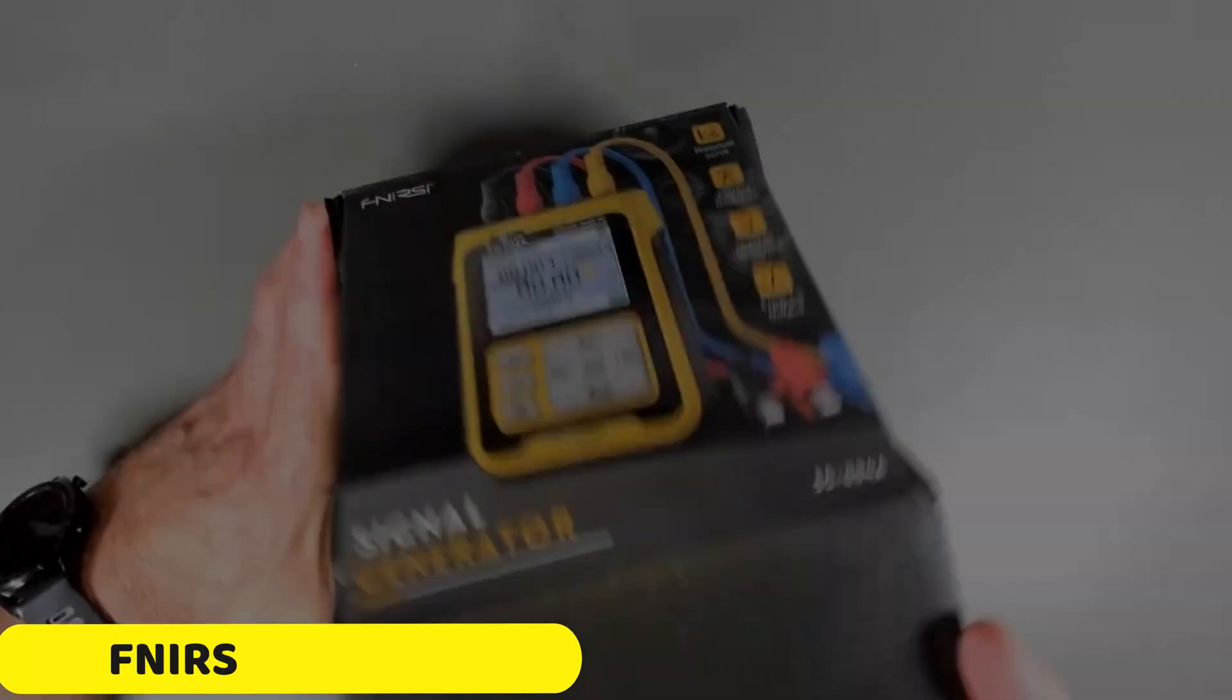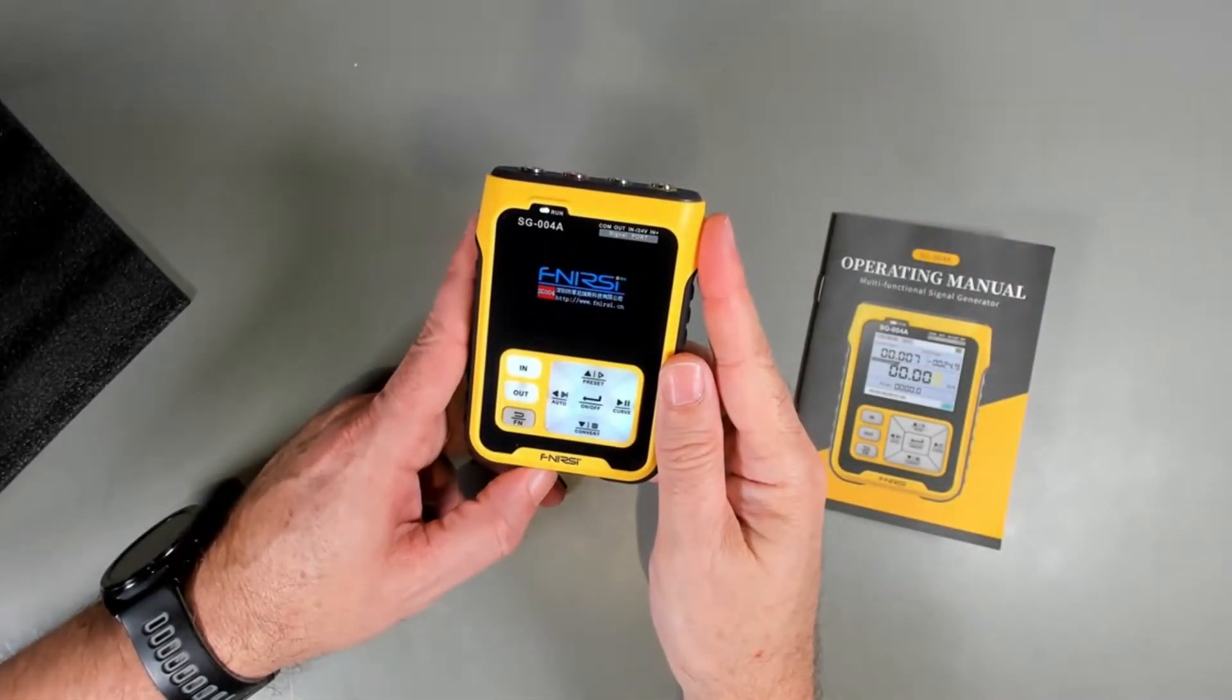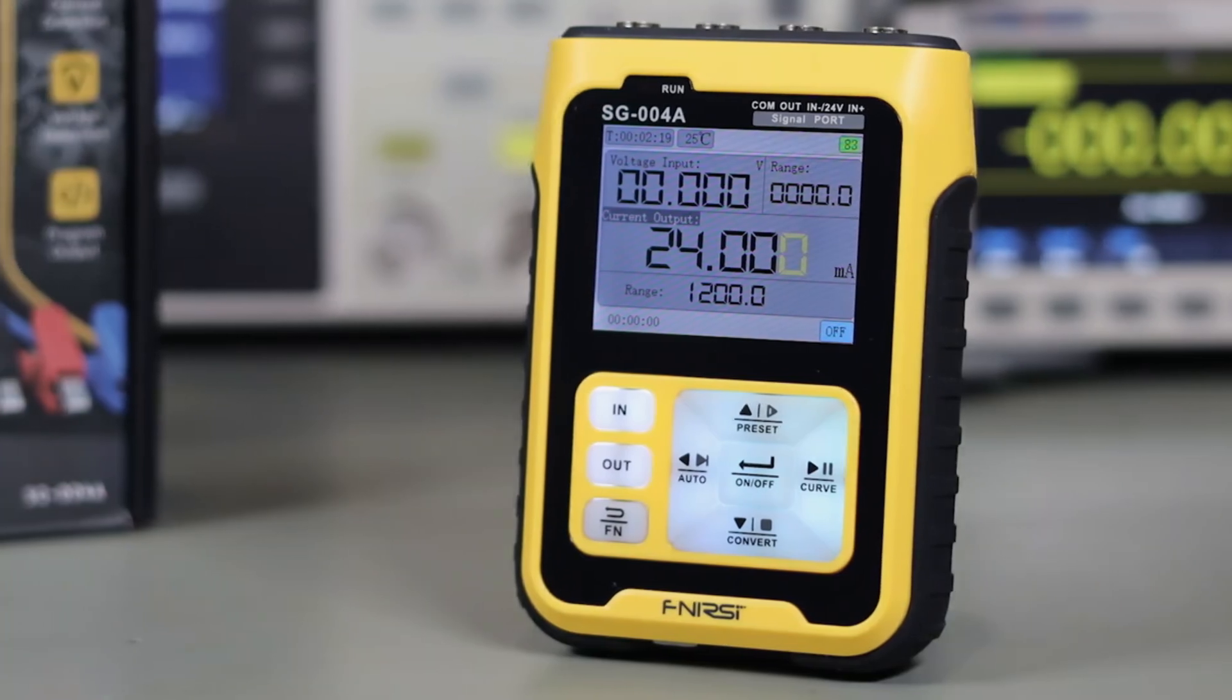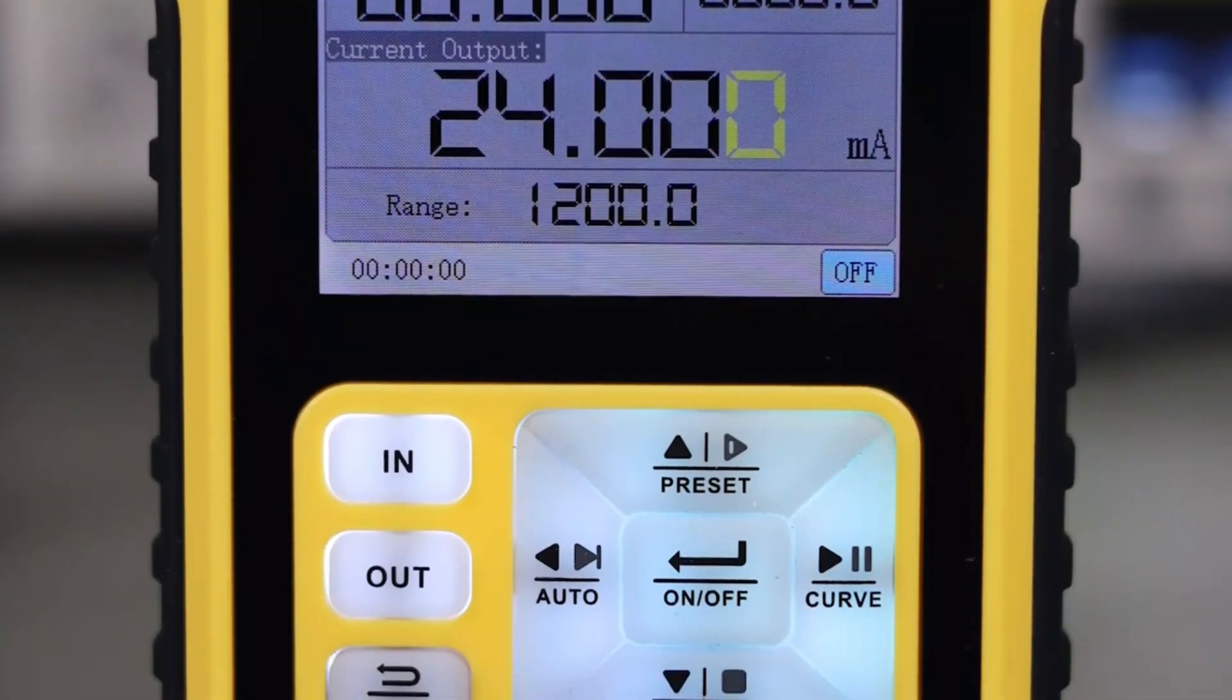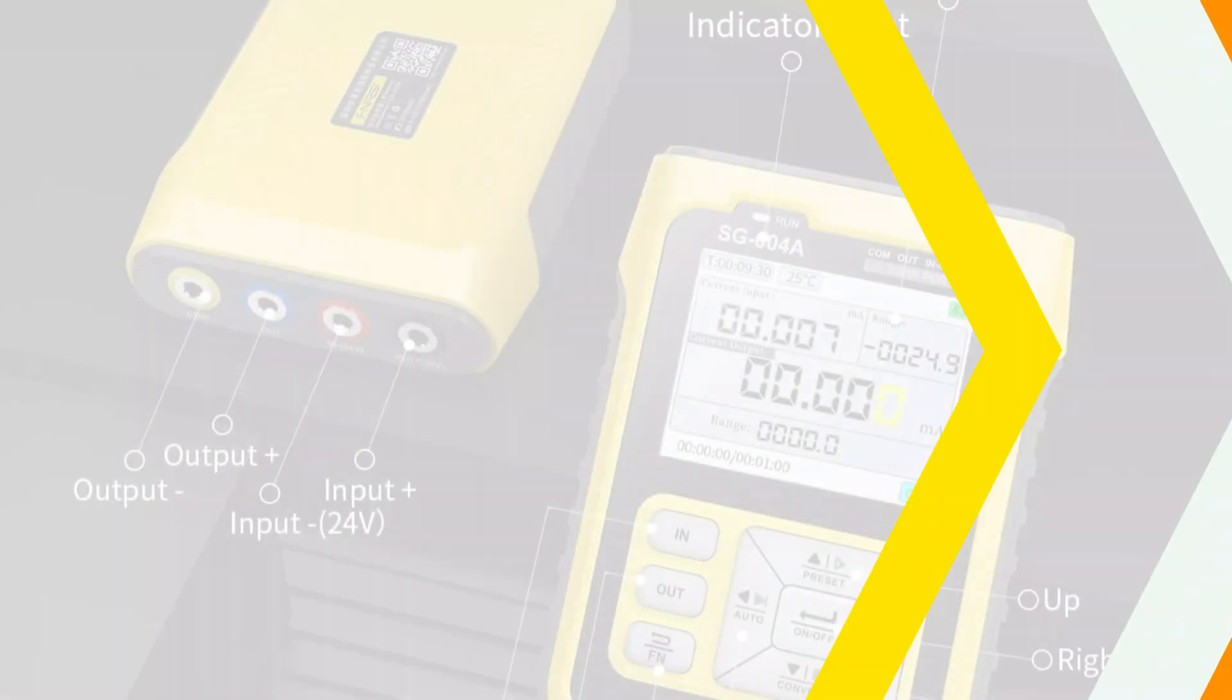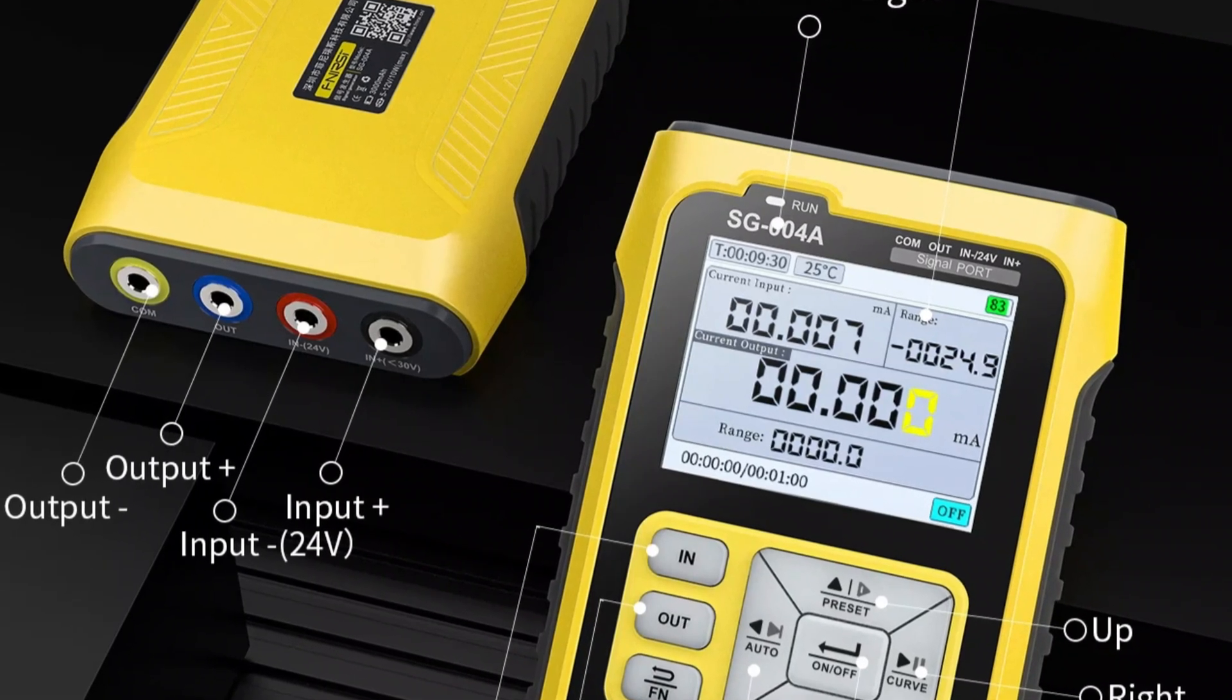Number 2: FNIRSI SG004A Signal Generator. The FNIRSI SG004A is a compact, reliable, and affordable signal generator designed for electrical DIY enthusiasts. It features a 2.9-inch display, making it ideal for projects with limited space. The SG004A is CE-certified, ensuring compliance with European safety standards. It is suitable for various applications from hobbyist tinkering to professional work on intricate projects.